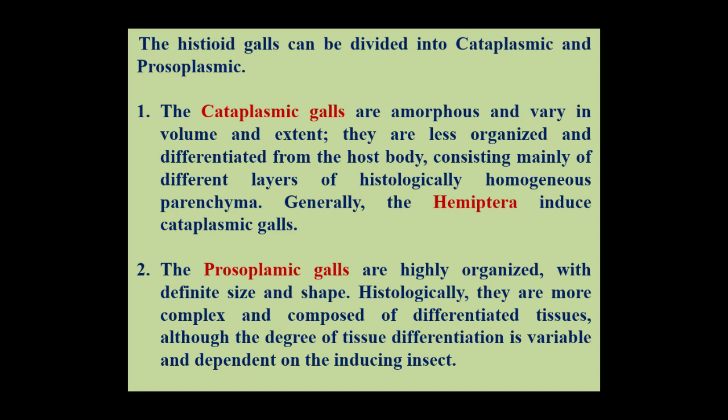While the prozoplasmic galls are highly organized, they have a definite size and a definite shape. Histologically, these prozoplasmic galls are more complex and composed of differentiated tissues, although the degree of tissue differentiation is variable and dependent on the inducing insect.